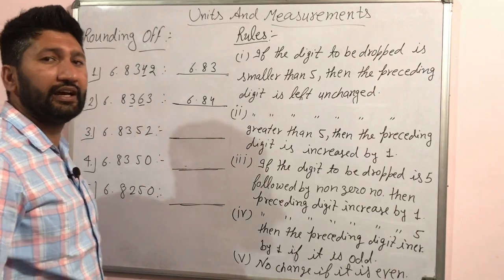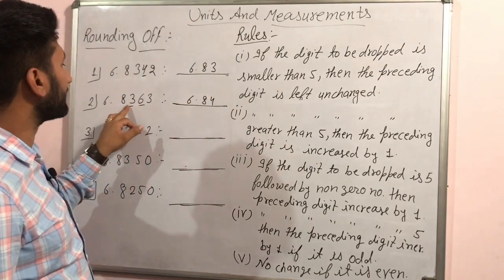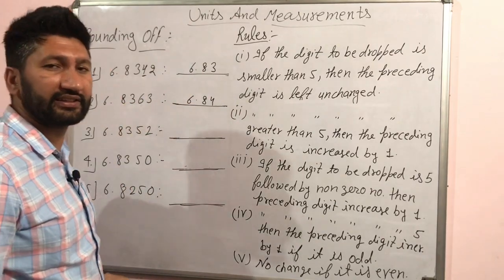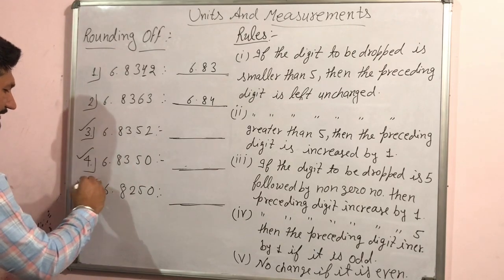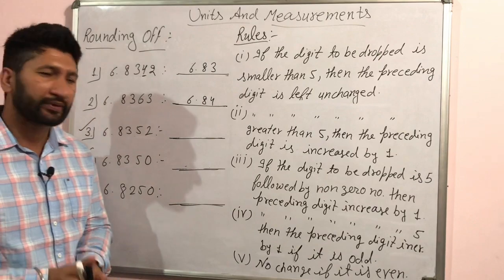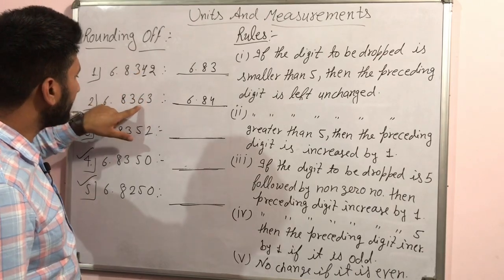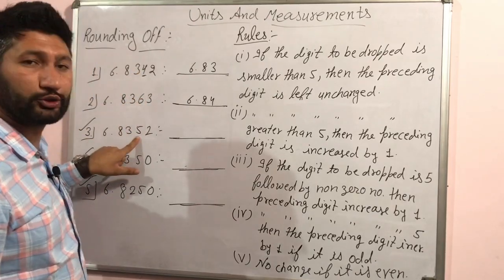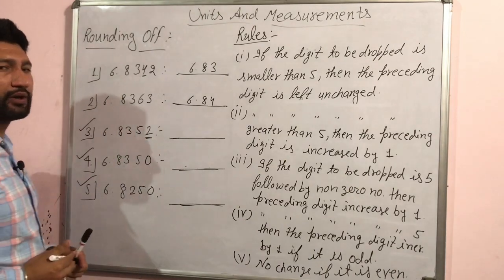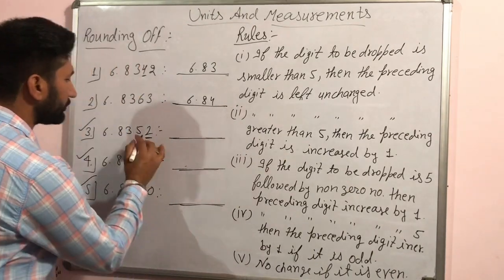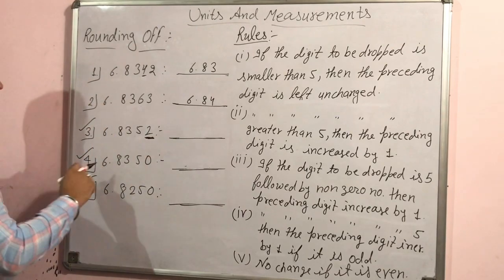So what will happen? No change — for example, 6.83. The second rule: if the digit is greater than 5, then increase the preceding digit by one — increase to 6-point-something. Now the third rule: if the digit is exactly 5, then what do we do? We have seen less than 5 and greater than 5; now for the third case, we look at what comes after the 5 — whether it is zero or non-zero.